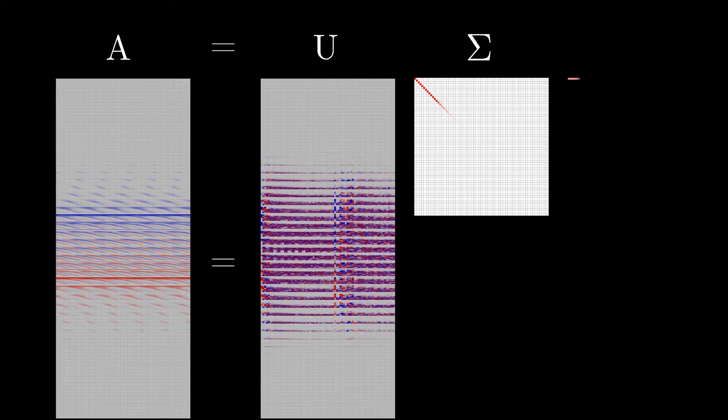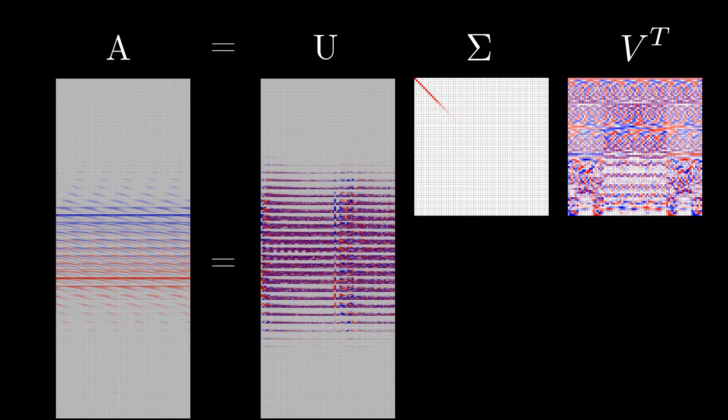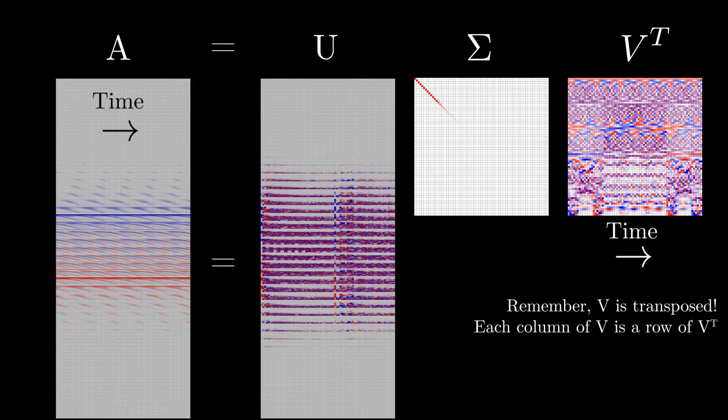Finally, the third matrix, V, is also unitary and is usually represented transposed. Each one of its columns is also a singular vector. If we organize our data matrix A such that the columns represent evolution in time, each column of V is a time series for the corresponding spatial basis vector of U.